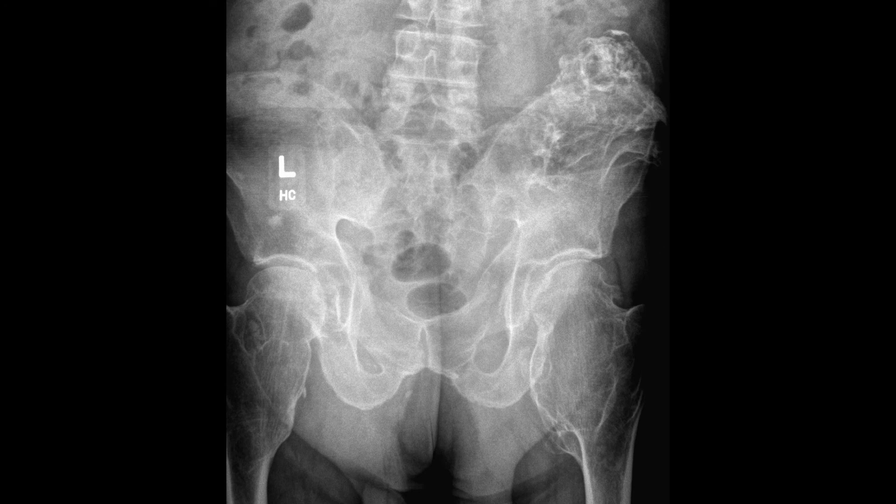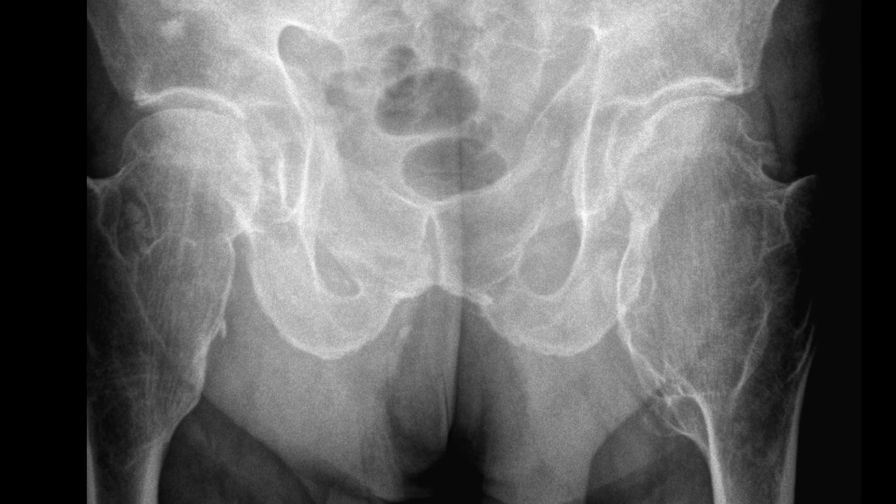No video on osteochondromas would be complete without showing hereditary multiple exostosis (HME). This is a hereditary condition where patients present with multiple osteochondromas throughout the spine and appendicular skeleton. These lesions tend to be larger and more expansile, with a higher probability of malignant degeneration. The large expansile changes in the hips are very classic with hereditary multiple exostosis.